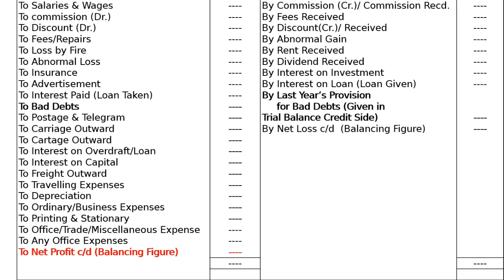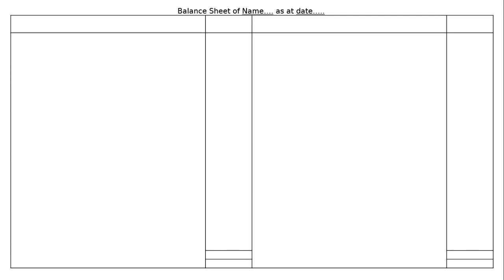Then come down to the balance sheet. The balance sheet of the name of the firm or individual is prepared on a particular date — 'as at date' will be given. The first line has liabilities with amount and rupee symbol on the left, and assets with amount and rupee symbol on the right. You can start from the asset side, beginning with current assets or fixed assets.